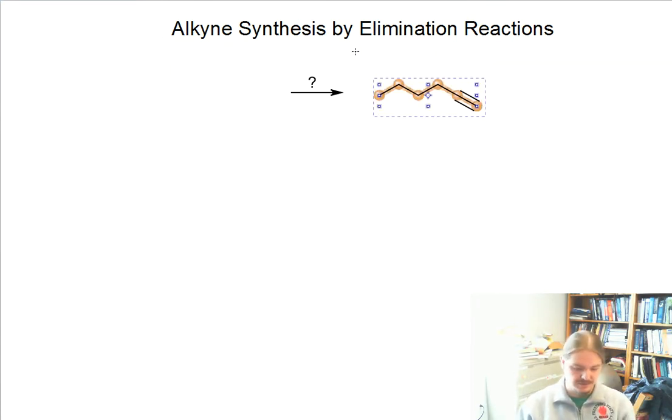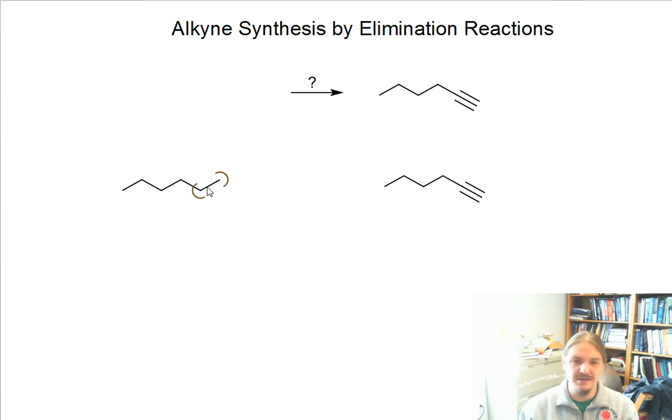Fortunately, we can synthesize this alkyne by an elimination reaction using a molecule that has two leaving groups. Actually, let's be generic. Let's put X in here as generic halide leaving groups.